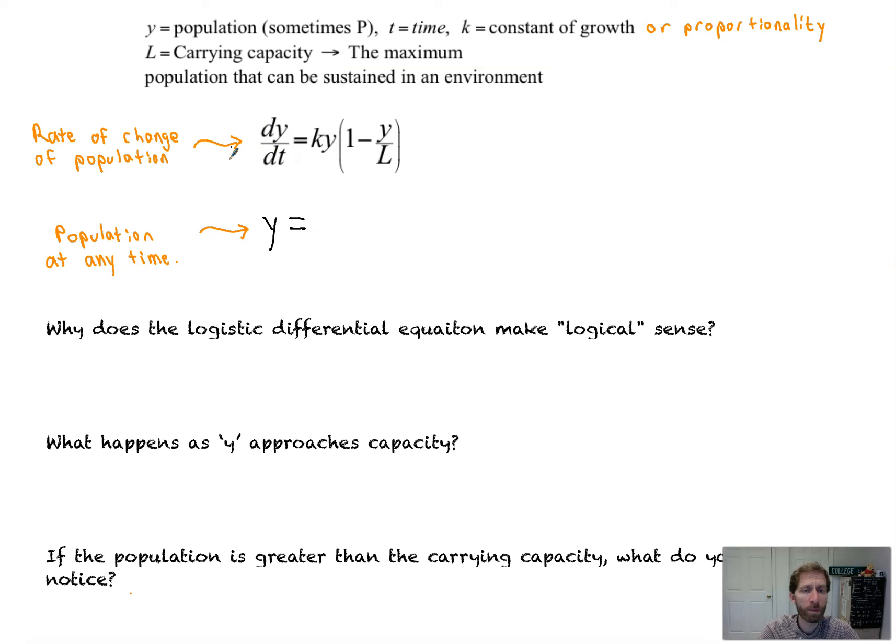The rate of change of the population, that's what this is, dy/dt. So the rate at which the population is changing is proportional to the product of the current population and 1 minus y over L. Your teacher or professor might have asked you to just memorize that. We're going to come back to why this makes sense shortly. But for right now, that's the rate of change. That's the derivative of the population function.